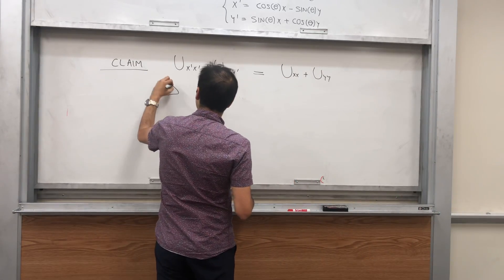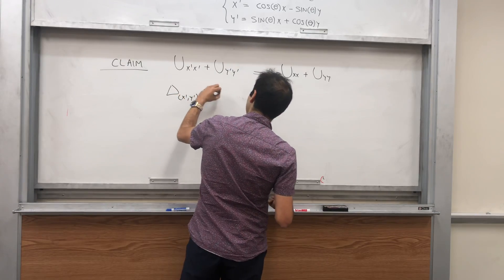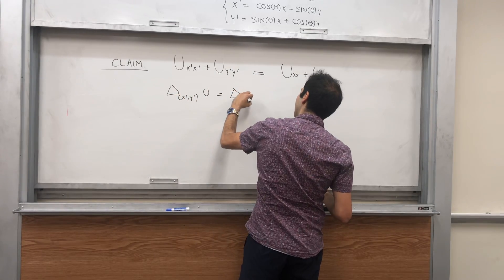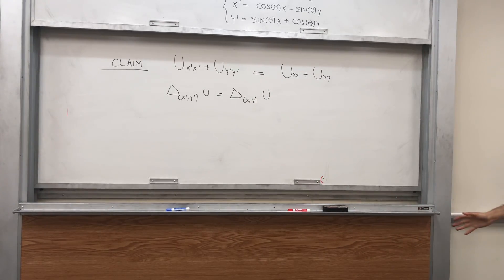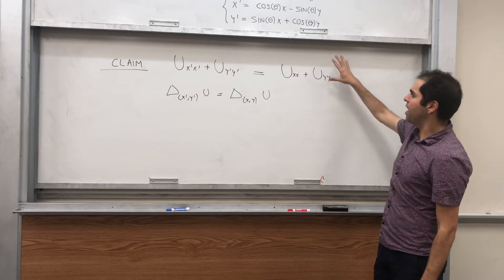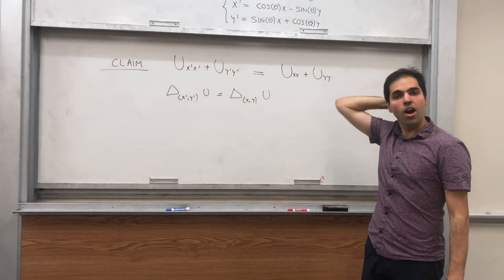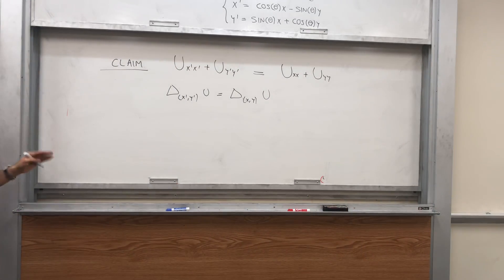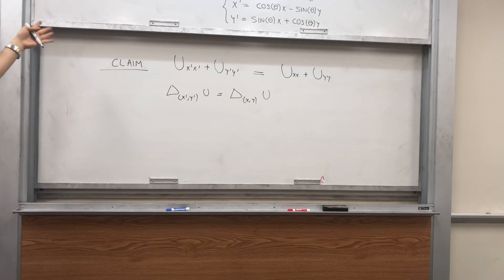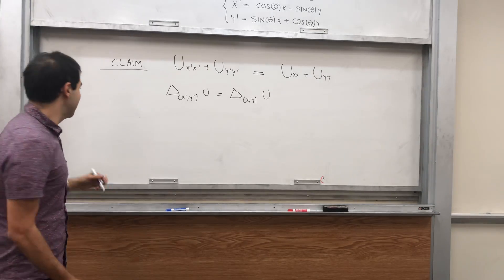So the claim is: u_x'x' plus u_y'y' is the same as the original Laplacian u_xx plus u_yy. In other words, another way of writing this is the Laplacian with respect to u. In particular, if u solves Laplace's equation — this equals 0 — then u solves Laplace's equation also in the new variables. It's very nice; this is what helps us solve Laplace's equation. But for today, let's just prove it.